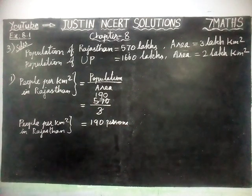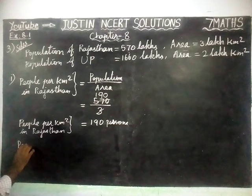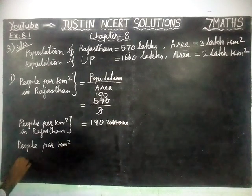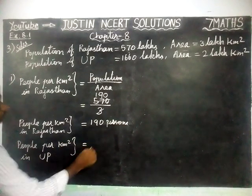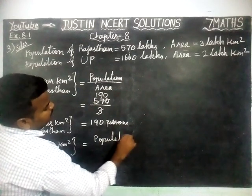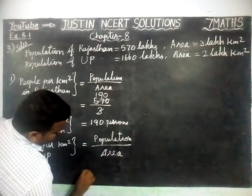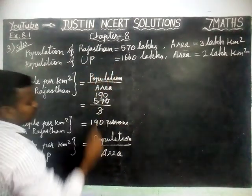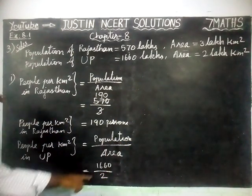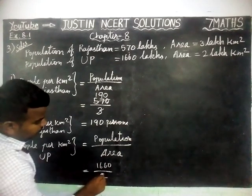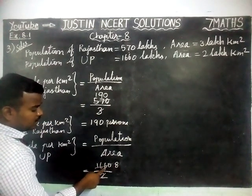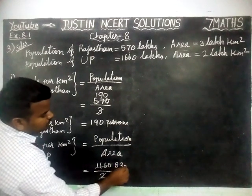Next we are going to find people per km² in Uttar Pradesh. Using the same formula: population divided by area. Population of Uttar Pradesh is 1660 divided by area 2 lakhs — both are in lakhs. Calculation: one 2 is 2, eight 2s are 16 with remaining 6, three 2s are 6, and we have 0s.